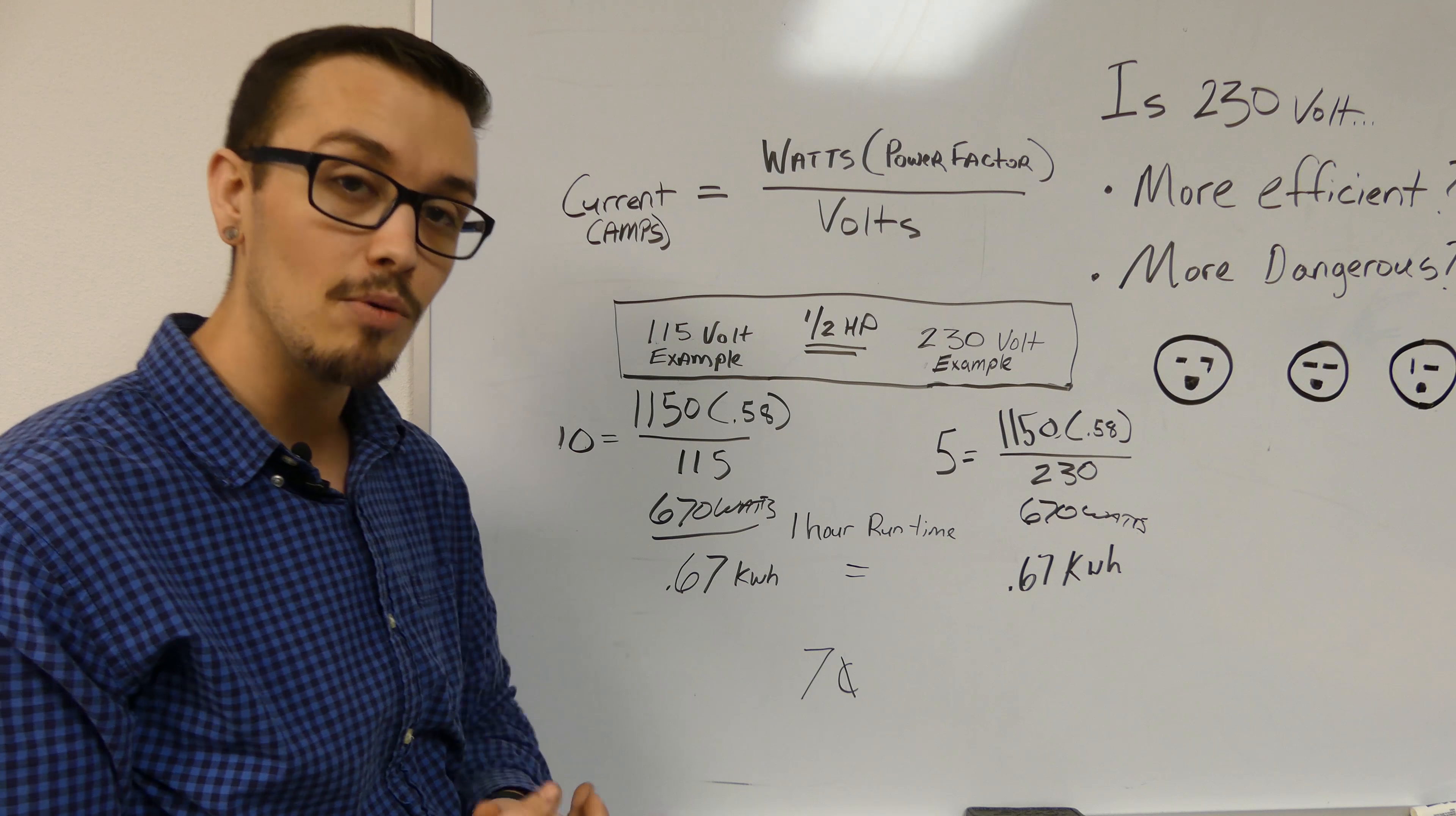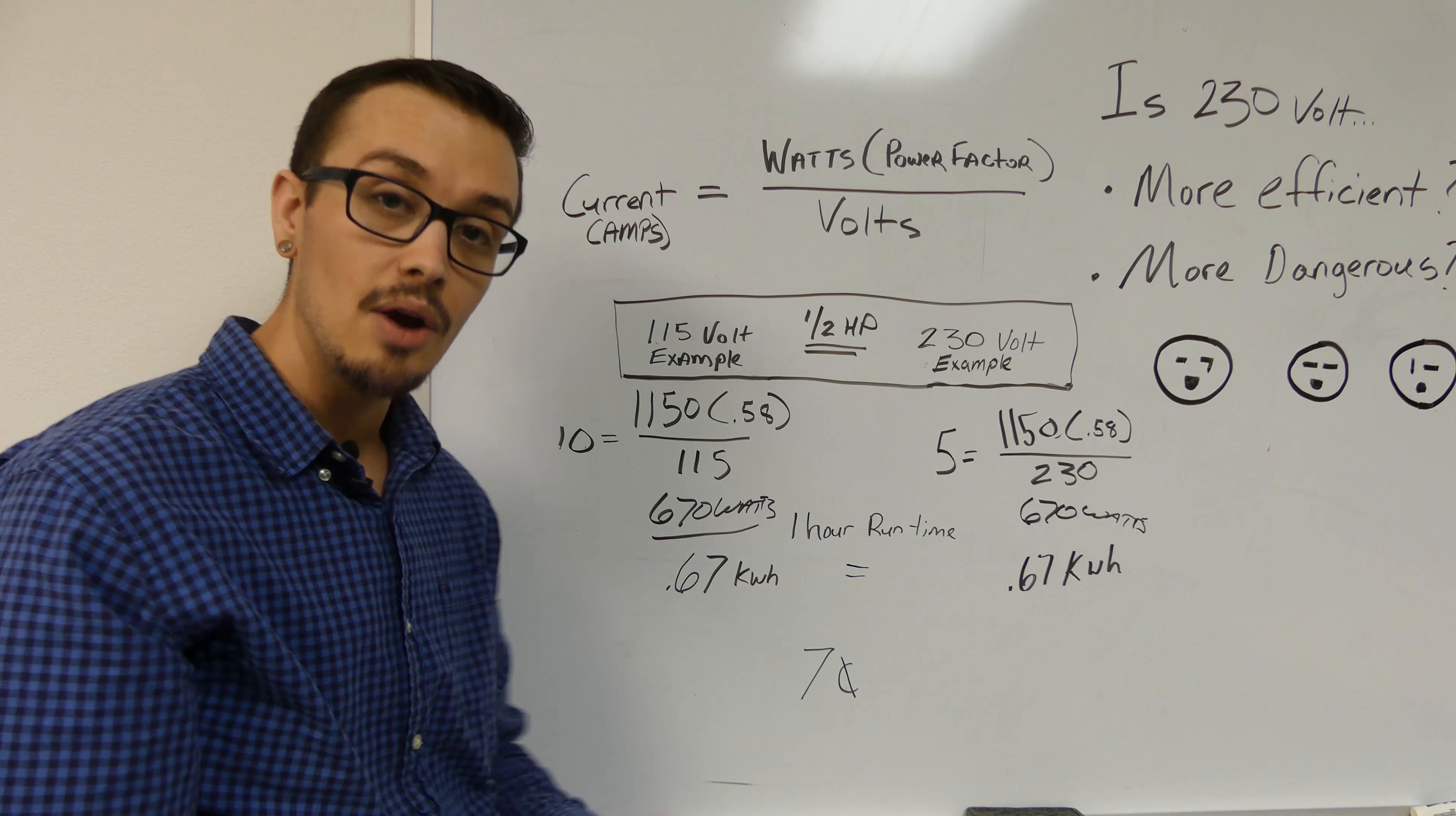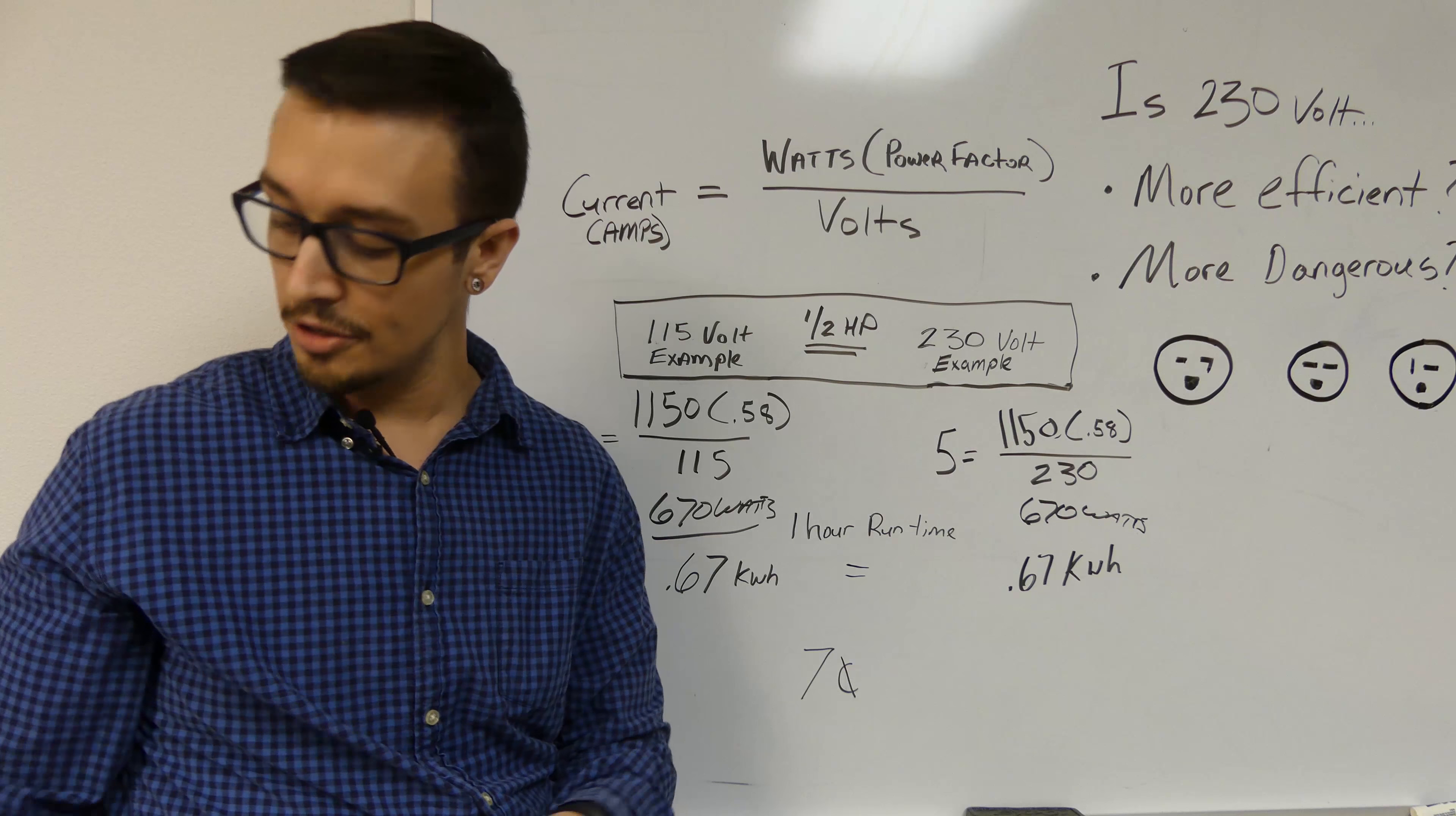Watts is a snapshot at a particular given time. If we were to run each of these motors side by side for one hour, we would multiply that out to get kilowatt hours. 670 watts times one hour equals 670 watt hours, divided by a thousand gives you 0.67 kilowatts. Up here in North Idaho, power's relatively cheap, about 10-11 cents a kilowatt hour. Running each of these motors would cost you about seven cents per hour. So there's clearly no advantage using 230 volt over 120 volt.